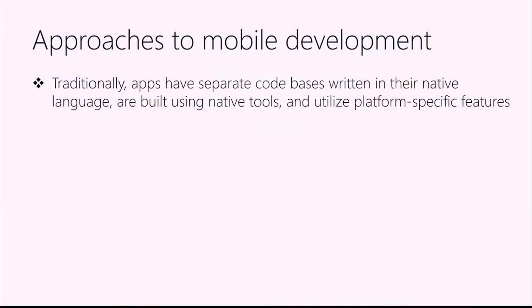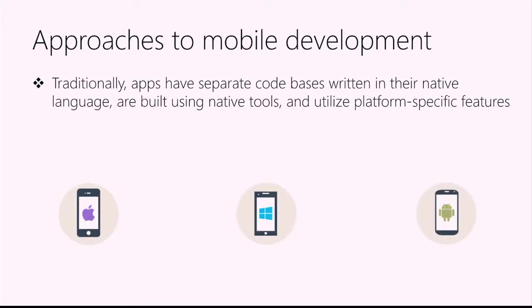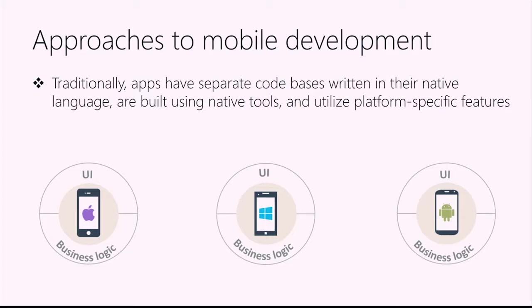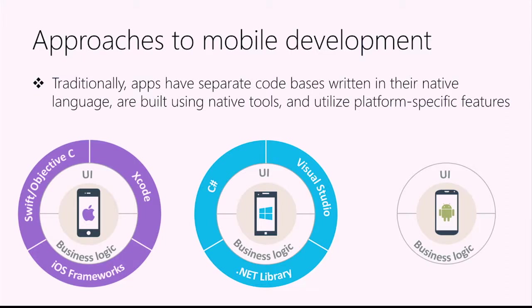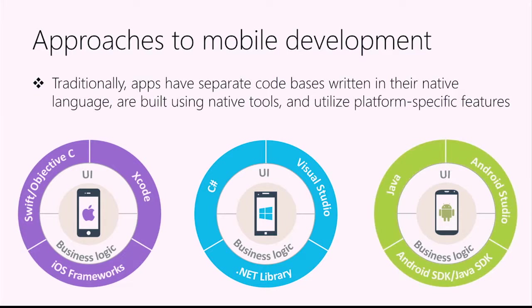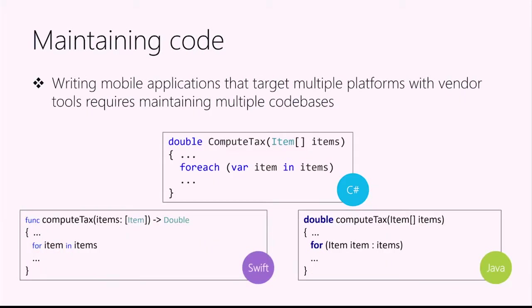Let's think about how we've typically been making applications. We've got three big mobile platforms, and if you want to hit all your users you need to target these major ecosystems. That means writing your business layer and UI using the native tools: for iOS that's Xcode with Swift and Objective-C; for Windows that's Visual Studio with C#; for Android that's Android Studio with Java. These are all fine products, but it means different development strategies, different languages — writing code three times.